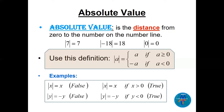Here is the important formal definition: the absolute value of a equals a if a is greater than or equal to zero, and equals negative a if a is less than zero. All the examples we will do are based on this definition.